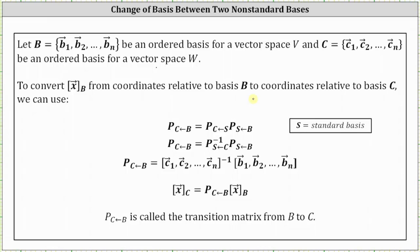We need to find the transition matrix from B to C, indicated by P sub B to C. We will do this by going through the standard basis S. The transition matrix from B to C is equal to the product of the transition matrix from S to C and the transition matrix from B to S.